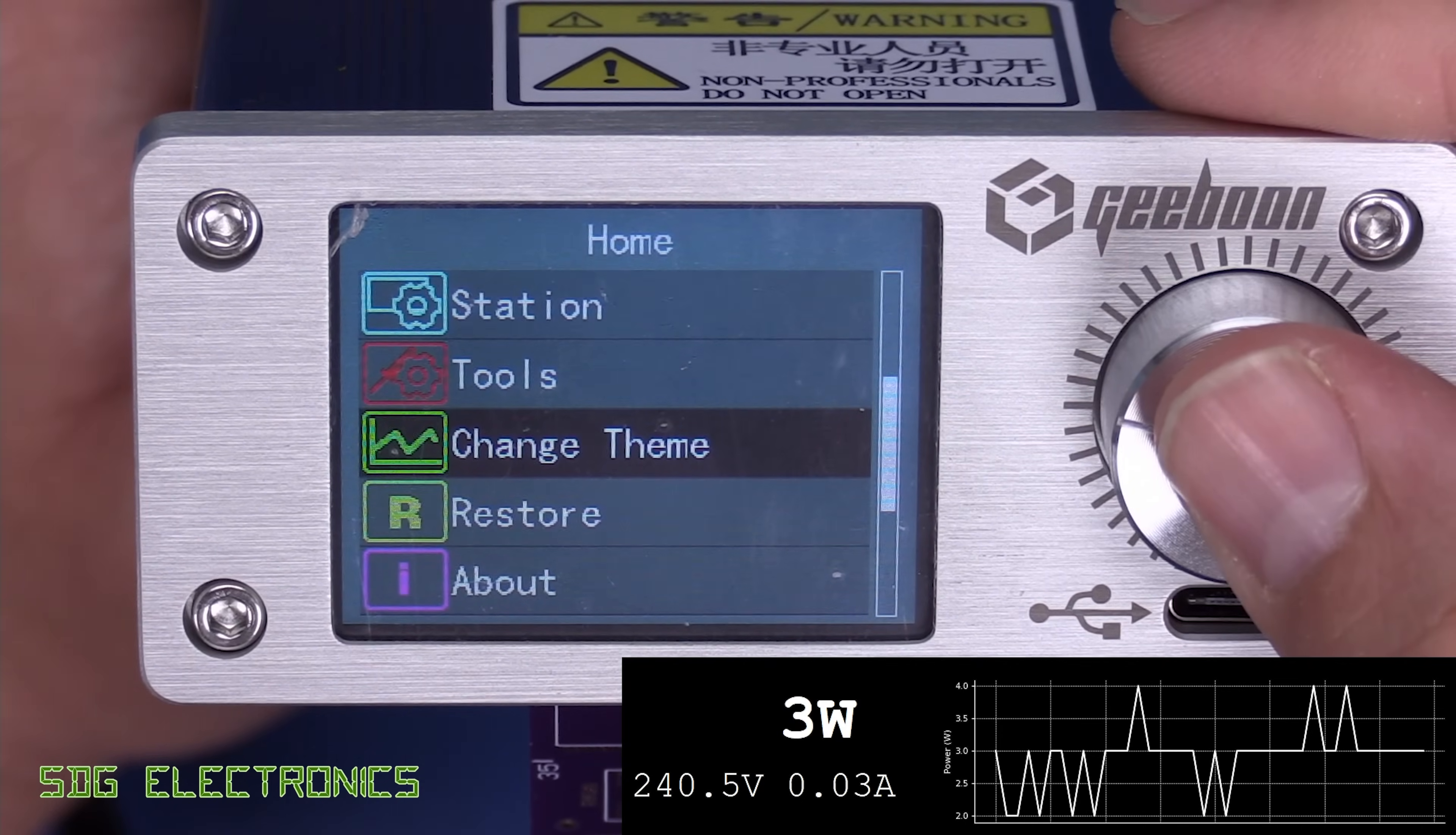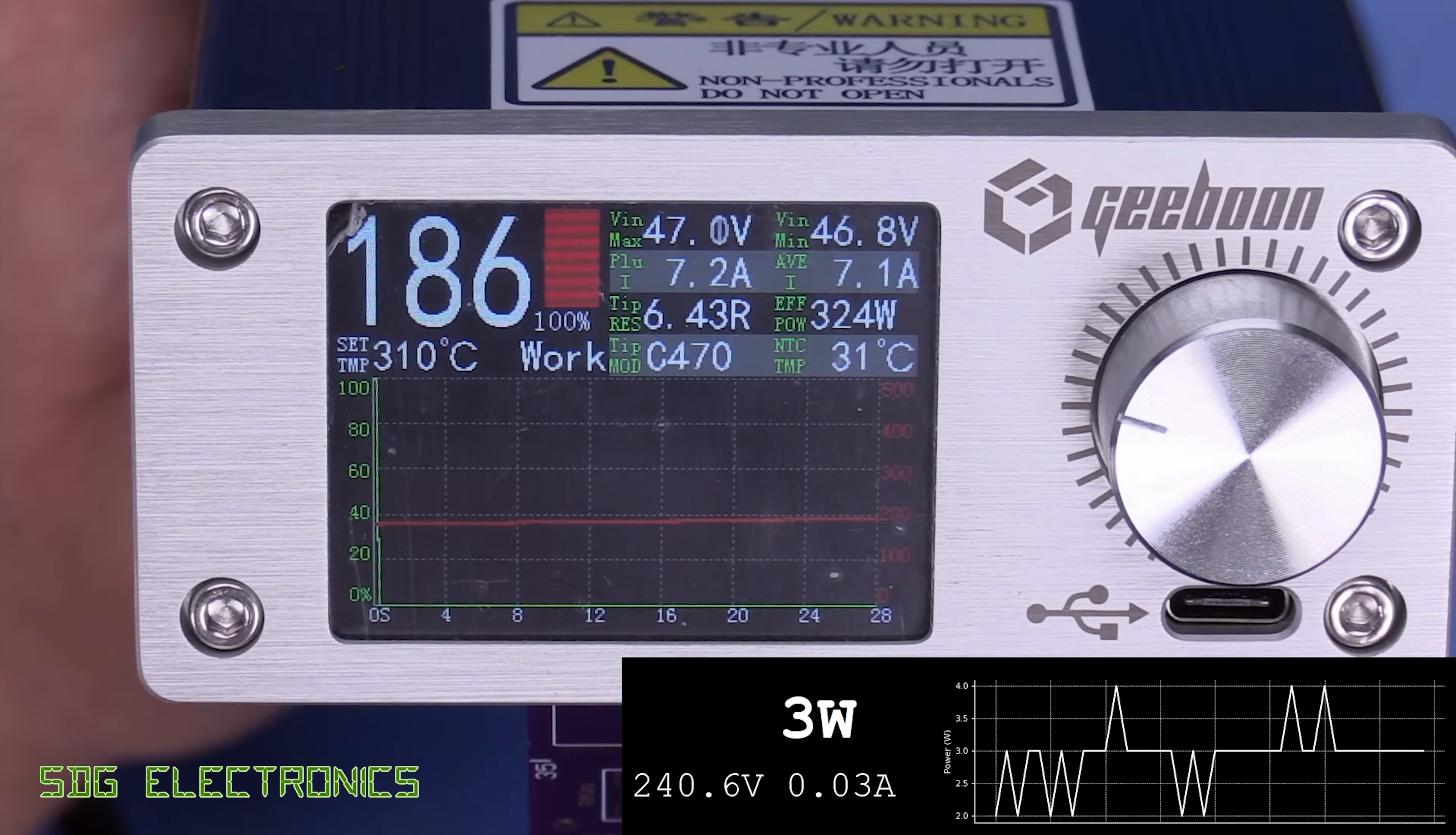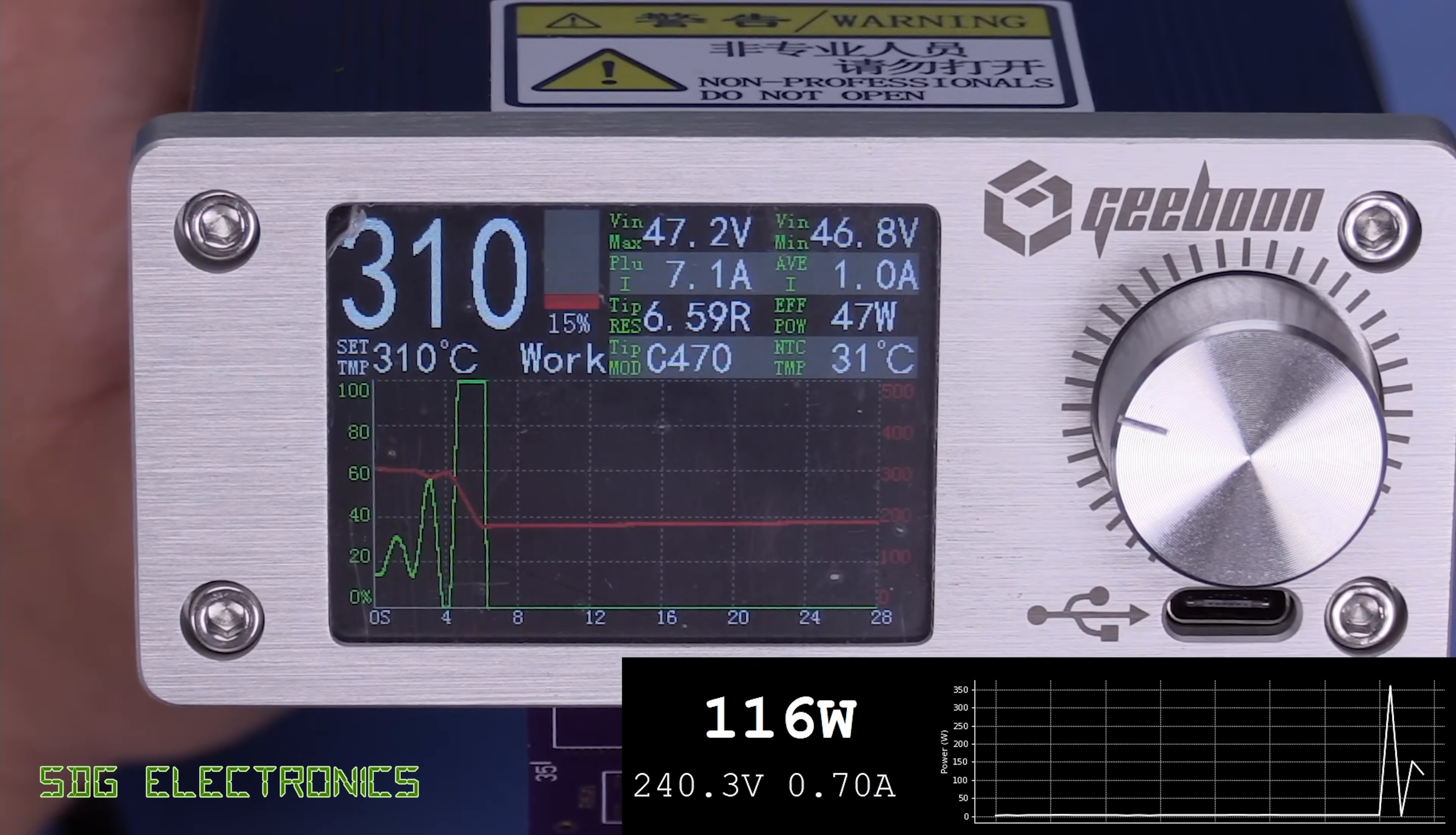So that's what it looks like. And if we enable the graphing, you can see on here, if I take the handpiece out of the cradle, then we've got a real time graph of what's going on. Now you can see actually, there's a bit of oscillation going on. So the PID loop could do with some tuning here.